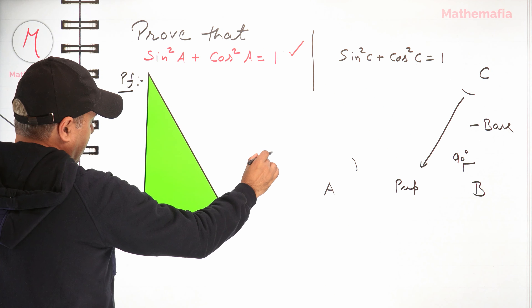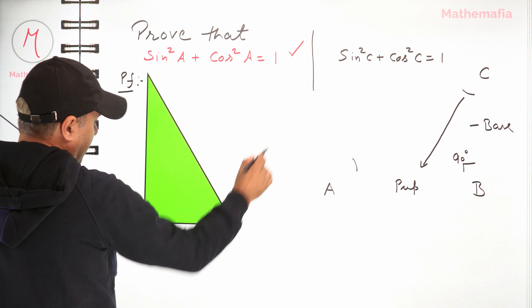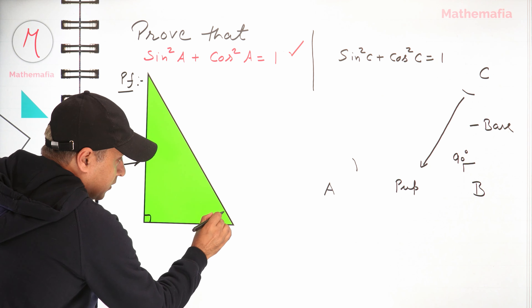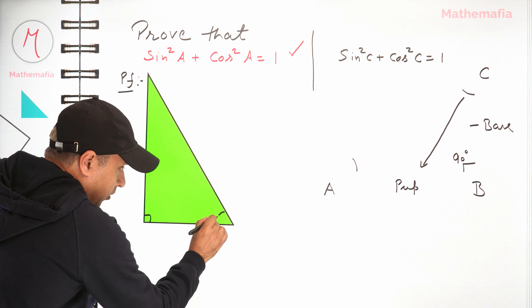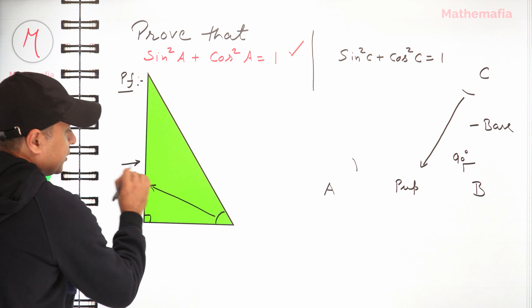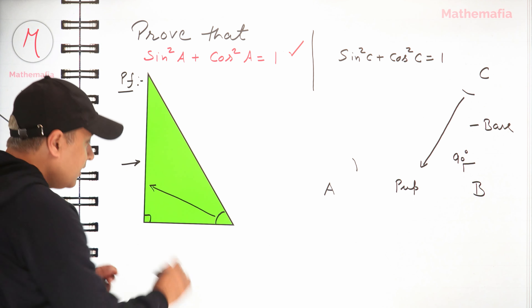If I rotate this triangle, I can take a different side as the perpendicular. When we talk about angle C, the side in front of it is the perpendicular, the adjacent side is the base, and the hypotenuse is always the longest side.